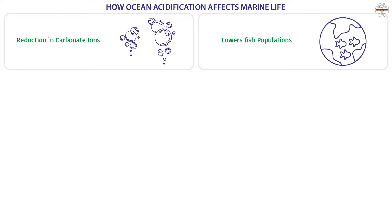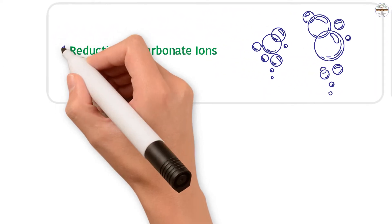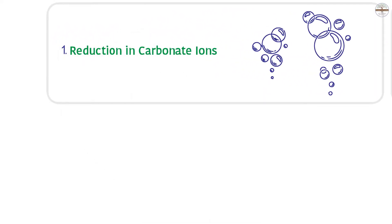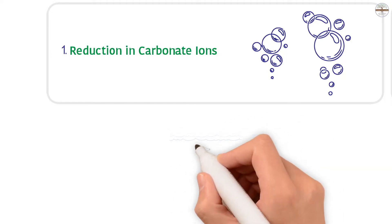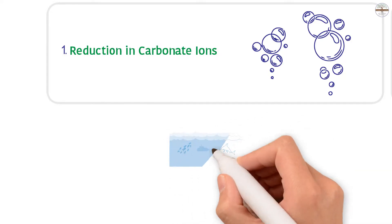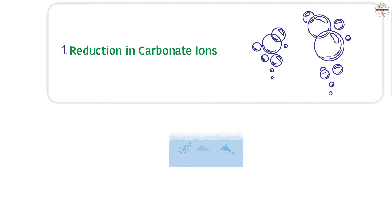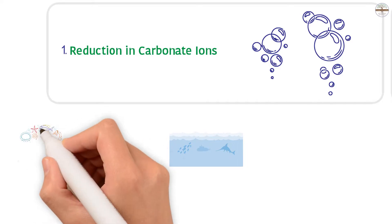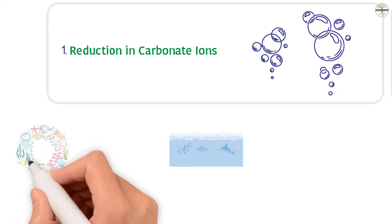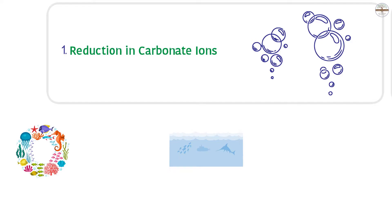How ocean acidification affects marine life: when ocean water becomes acidic, it puts aquatic animals at risk. Overall, acidification damages marine ecosystems, which can lead to the extinction of important species. Carbonate ions are very important for all marine life — they are the building blocks for most things in the ocean. With the help of carbonate ions, coral reefs grow in the ocean through a process scientists call calcification.